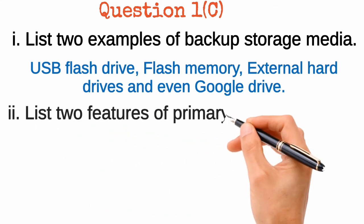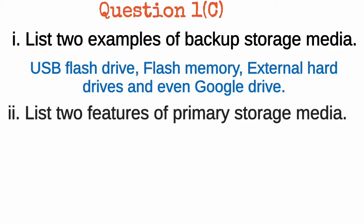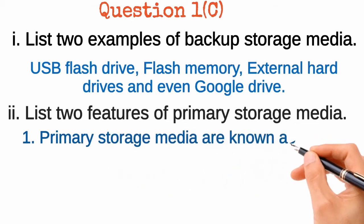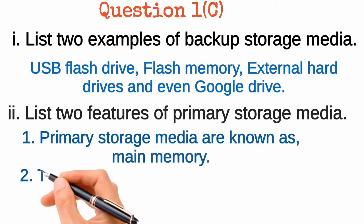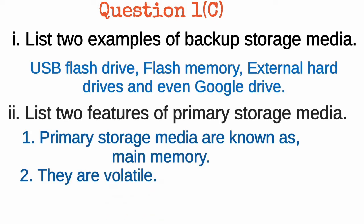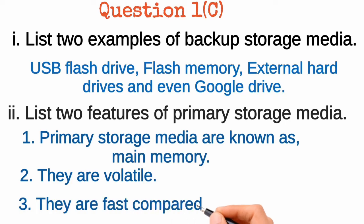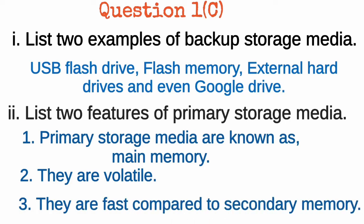Question 1c part two: list two features of primary storage media. Features are the same as properties or characteristics. First, primary storage media are known as the main memory. Second, they are volatile — RAM (Random Access Memory) is a key example. Third, they are fast compared to secondary memory.